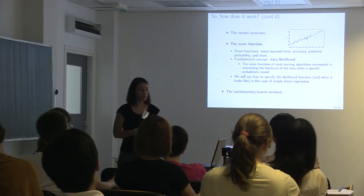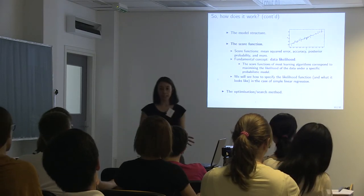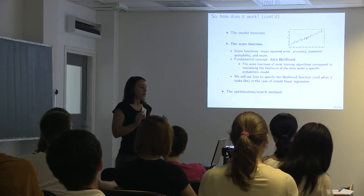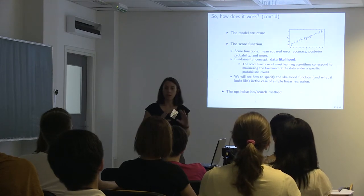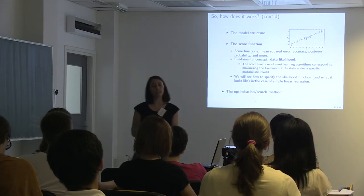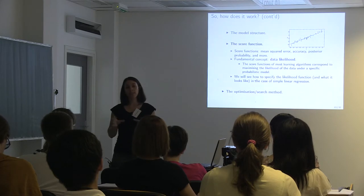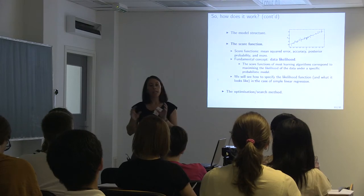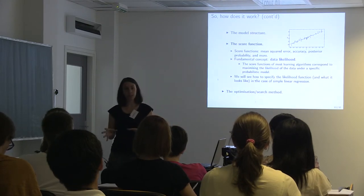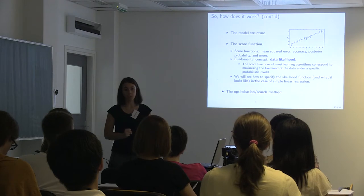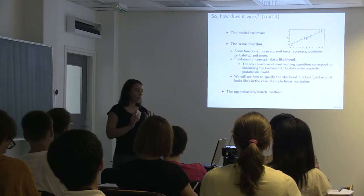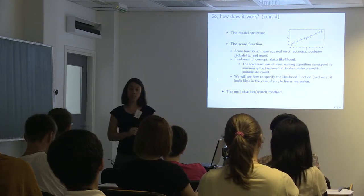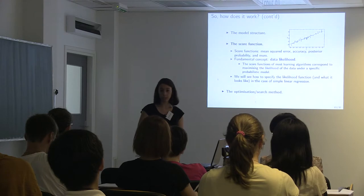In machine learning, one of the fundamental concepts — also in statistics — is data likelihood. A lot of these algorithms and score functions actually boil down to writing the likelihood of the data under a certain model. Once we decide the model and write the likelihood function, we can optimize the model. Likelihood is very important and we'll see how to use it in the context of linear regression.